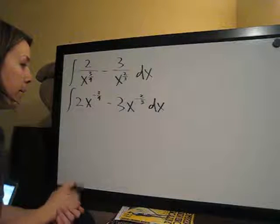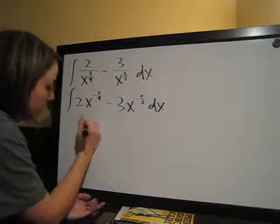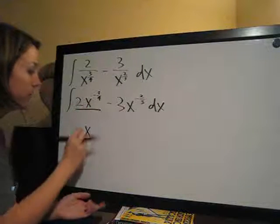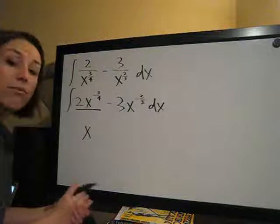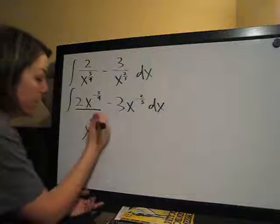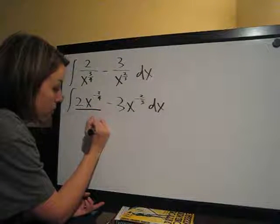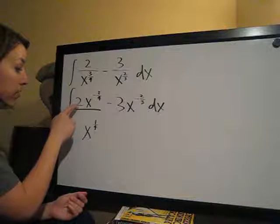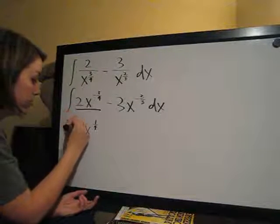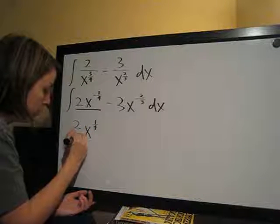And then we can integrate. So we're going to write our x down here, looking at this term. x, we add 1 to the exponent. Negative 3 fourths plus 1 is positive 1 fourth. And then we're going to divide the coefficient by the new exponent, 2 over 1 fourth.